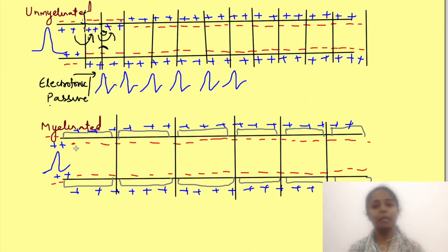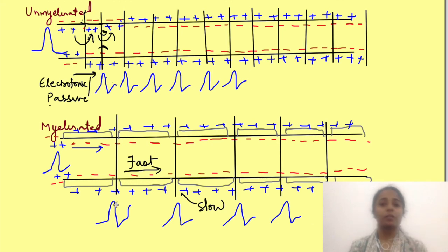On the other hand in myelinated neuron potential loss is lesser in the myelinated regions and hence action potential is regenerated only at the nodes of Ranvier. Also the electrotonic conduction is much faster in the myelinated region. So the potential just sweeps through the myelinated region and slows down only at nodes of Ranvier where action potential is being regenerated. Due to this very fast conduction at myelinated regions it appears action potential is jumping from node to node. This is known as saltatory conduction.